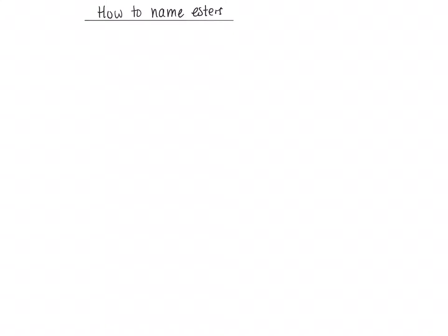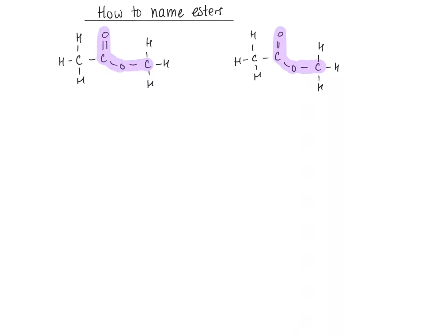How to name esters. Here are two esters, and you can tell that they're esters because they have the same arrangement of a carbon double bonded to an oxygen. That carbon is bonded singly to an oxygen, and there's another bond between the oxygen and a carbon. So it's carbon double bond oxygen, bonded to an oxygen, bonded to a carbon.